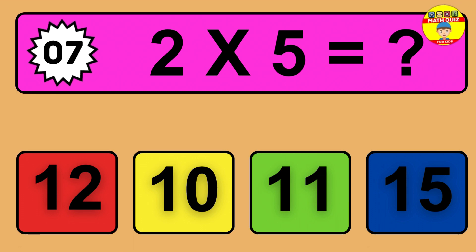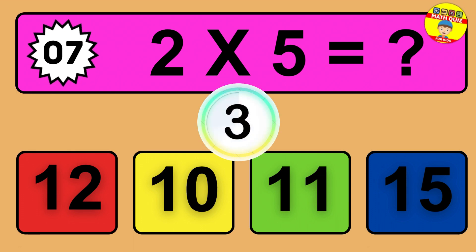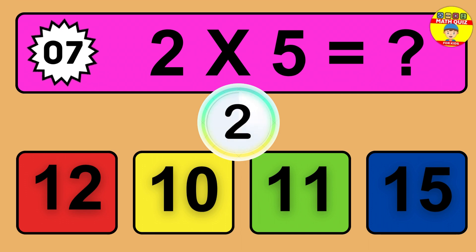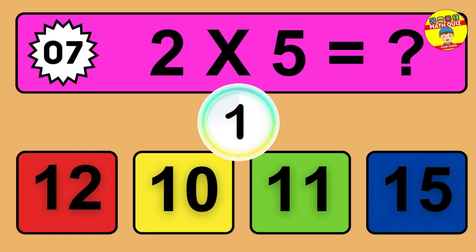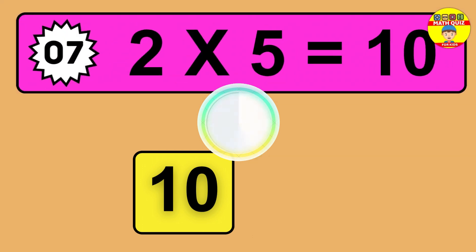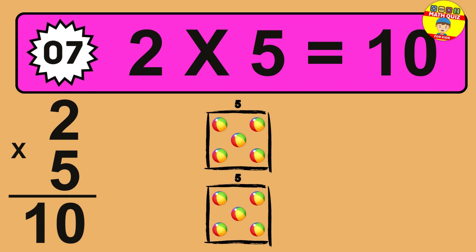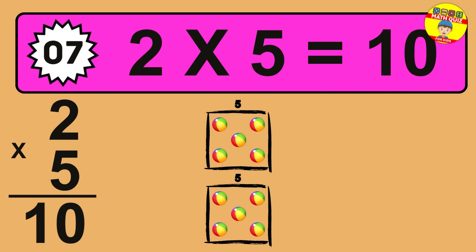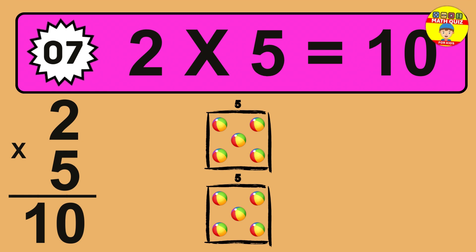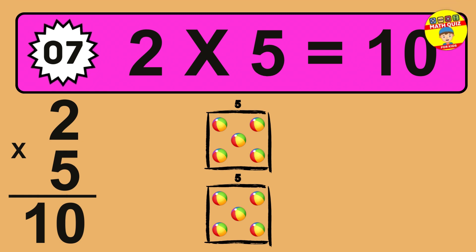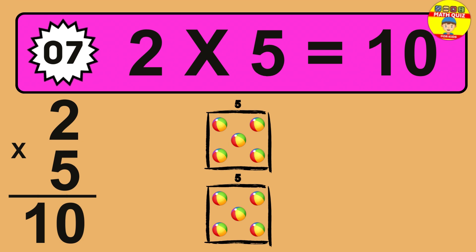Question 7. 2 times 5 equals what? The answer is 2 times 5 is 10. To calculate, we have 2 groups with 5 balls each one. So how many balls do we have? 10 balls.